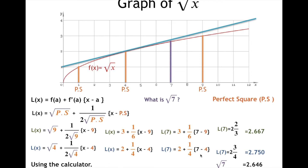Using a calculator, √7 = 2.646. We used perfect squares to approximate the square root of 7, and now we choose which approximation is closest. Comparing 2.667 and 2.750 to 2.646, the closest is when we used the perfect square 9. As you can see on the graph, 9 is closer to 7 than 4.